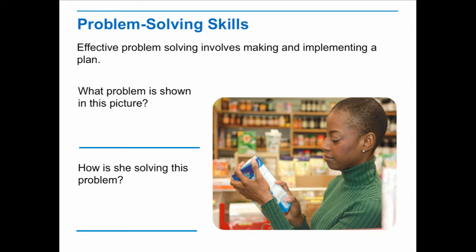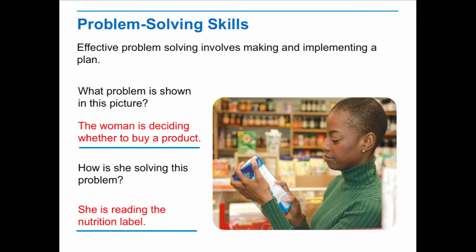And here are some possibilities that you might have talked about with the crossword puzzle. Here's a lady, and she's looking at something at the supermarket. What problem is shown in this picture? Yes, she's trying to decide whether or not to buy that product she's looking at. What's she doing to solve this problem? It looks like she's reading the nutritional label. She's concerned about what is in the food and if it's something she wants to add to her cart so she can serve it to herself or to her family.